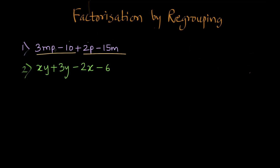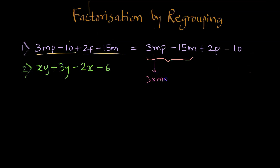Now our job is to see whether if we rearrange the terms and then group them, we will find common factors. So 3MP was paired with minus 10. Let us try and pair it with minus 15M instead, because we see M and M here, and we also know 15 has a factor of 3. So we can put 3MP minus 15M together, and then write 2P minus 10. Now for 3MP minus 15M, the factors of 3MP are 3M times P, and for 15M the factors are 3, 5, and M. We see 3 and M are common.